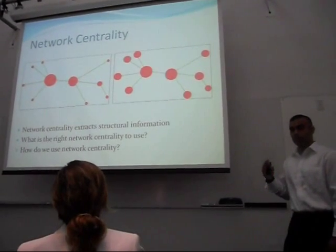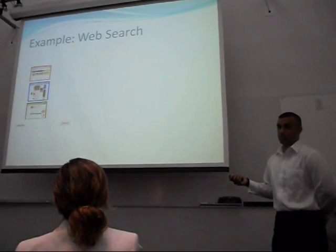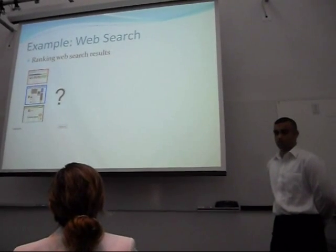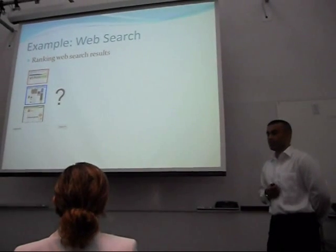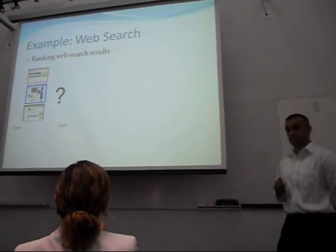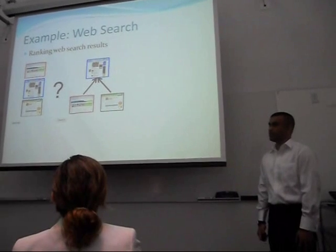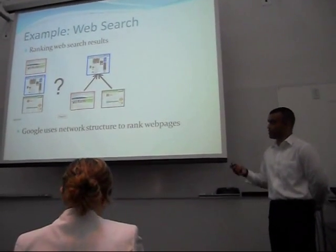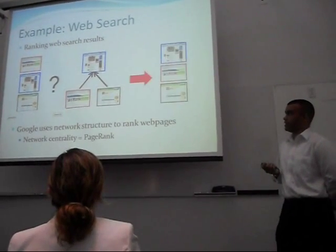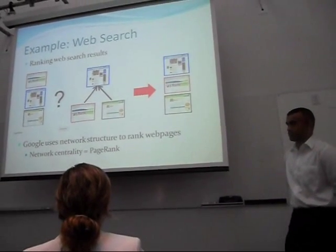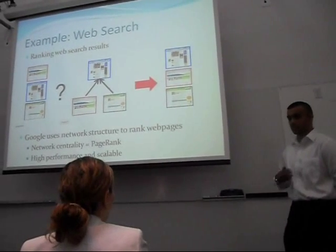This philosophy has been used before on a very well-known problem with great success: web search. The problem is: you type a query like 'networks,' get a bunch of matching pages, and the challenge is how to rank results in order of relevance. One way is to look page by page at content. But another, more efficient way is to observe that pages don't exist in isolation — they exist in a network because web pages link to each other. This is what Google did initially: they calculated a centrality measure called PageRank on the web network and ranked pages by their PageRank score. PageRank is high-performance — Google works pretty well — and also scalable, computing PageRank for the entire internet. So here we see network centrality giving us a scalable, high-performance solution.